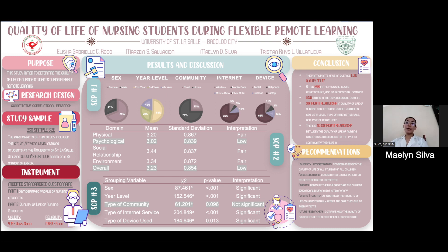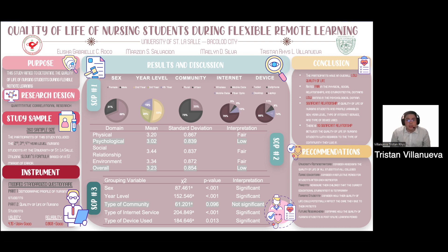Regarding the relationship between the level of quality of life and study variables, results revealed significant relationships between nursing students' quality of life and the variables of sex, year level, type of internet service, and type of device used. However, the type of community was shown to not be significant in terms of affecting nursing students' quality of life.